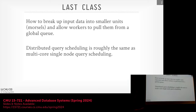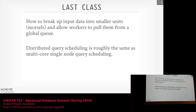Where we left off last class was we showed how to take a query plan, identify what data it's going to access, and break that data up into smaller units called morsels. That's one approach we looked at — have them pull from some kind of global queue. The pull-based approach was going to be superior to a push-based approach for scheduling, and morsels — the idea of breaking up large chunks of data into smaller parts — is not unique. That's an old idea in parallel data systems.